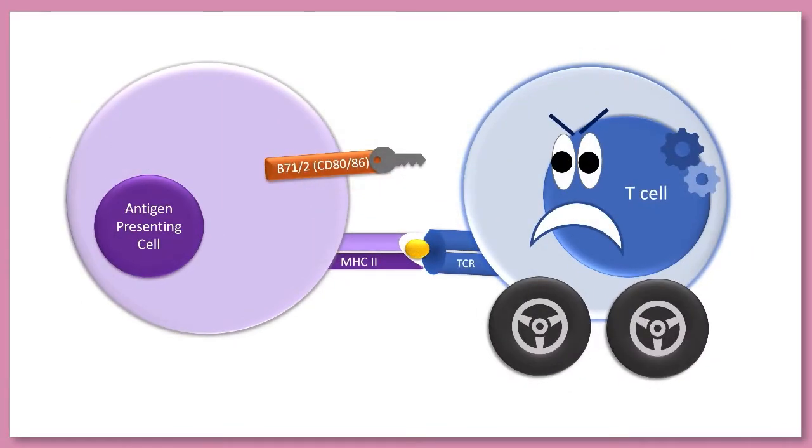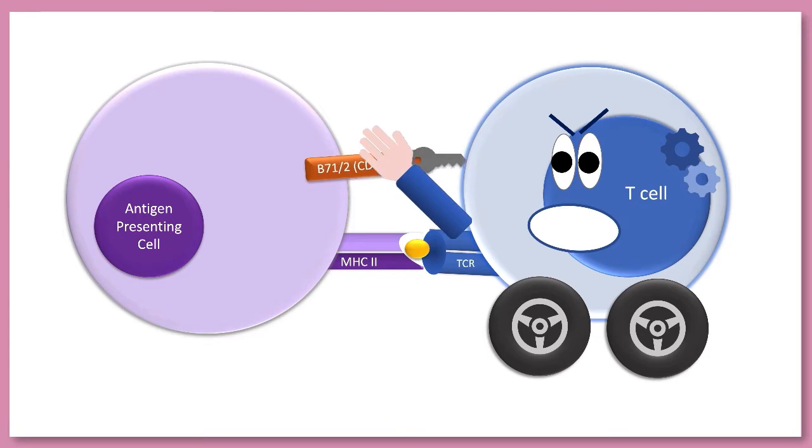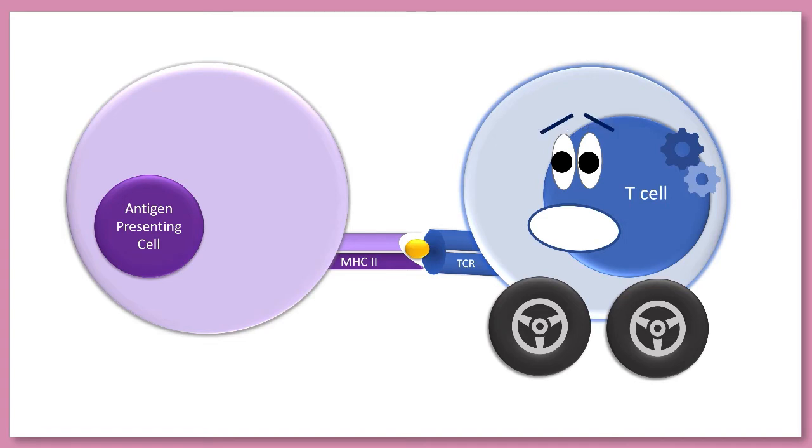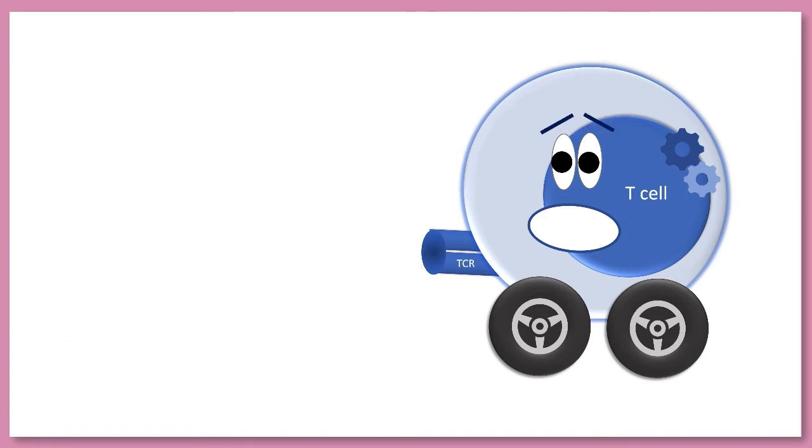And a really funny thing that can happen at this stage is something called transendocytosis. It's kind of like a little T cell tantrum. The T cell literally reaches out, grabs the B7 on the antigen presenting cell, ingests it and destroys it. And with that, the cuddle party between the T cell and the dendritic cell comes to an abrupt end.